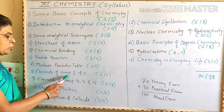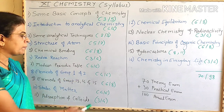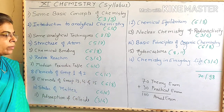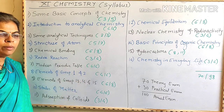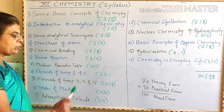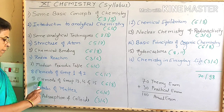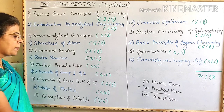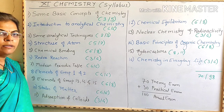The seventh topic is Elements of Group 1st and 2nd. Weightage is 4 or 6 — 4 marks are compulsory and 6 marks are with options. The ninth topic is Elements of Group 13, 14 and 15. Weightage is 6 or 8.